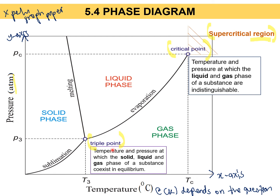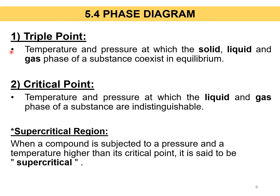You must know what the triple point means. The triple point is the point where the solid, liquid, and gas phases are all in equilibrium — there is an intersection here. This intersection is the triple point. The last intersection between the liquid and gas phase boundary, at the top, is the critical point. This is the point where the temperature and pressure of the liquid and gas phases are indistinguishable. So the triple point and critical point have been explained, along with the supercritical region — which is where the compound's pressure and temperature are higher than the critical point.